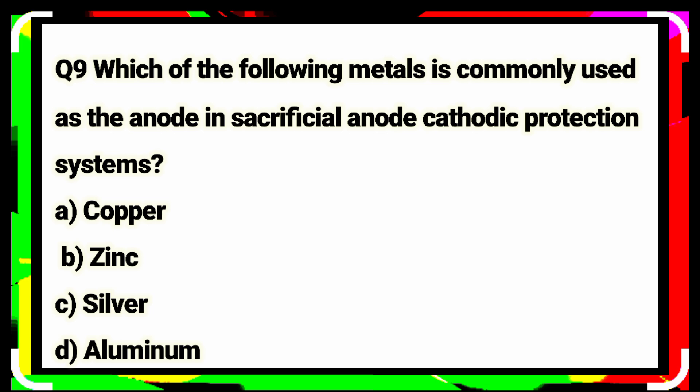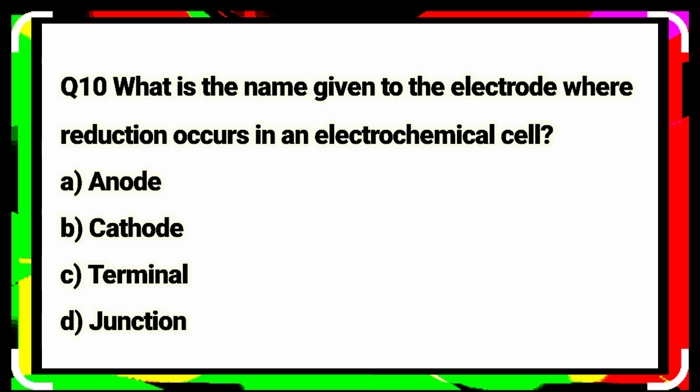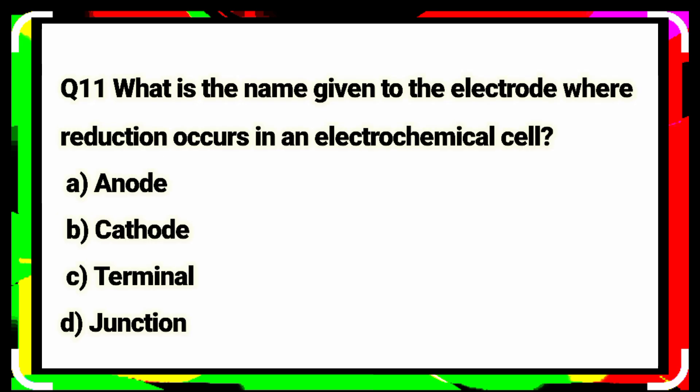Option A is the correct answer. Question number nine: which of the following metals is commonly used as the anode in a sacrificial anode cathodic protection system? Aluminum. Option D is the correct answer. Question number ten: what is the name given to the electrode where reduction occurs in an electrochemical cell? Option A is the correct answer.